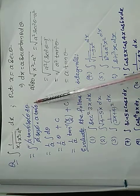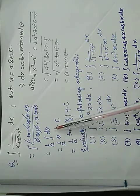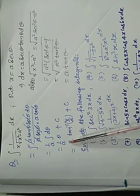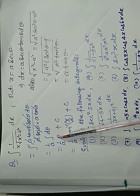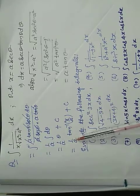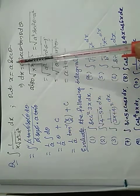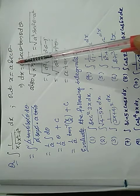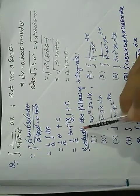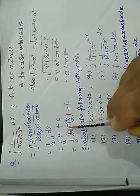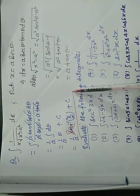Now, tan theta, sec theta, and a will cancel in numerator and denominator. You will get 1 upon a integration d theta. So, this is equal to 1 upon a theta plus c. Theta will be found from sec theta equals x upon a, so theta equals sec inverse x upon a. The final result is 1 upon a times sec inverse x by a plus c.